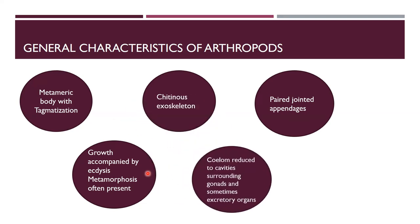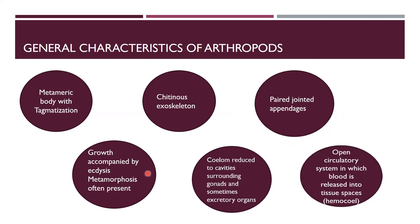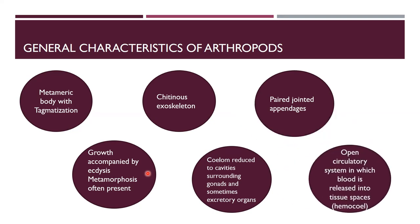The coelom is reduced to cavities around the gonads and excretory organs, so their coelom is called a hemocoel. They have an open circulatory system and the blood is released in tissue spaces, which is known as the hemocoel.